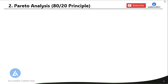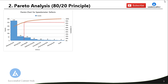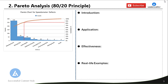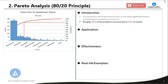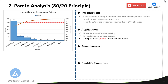Now let's go to the second decision making tool, which is Pareto analysis, also called the 80-20 principle. Pareto analysis is a prioritization technique that focuses on the most significant factors contributing to a problem or outcome. This principle states that roughly 80% of problems occur due to 20% of the causes. Pareto analysis is the most used and effective tool in problem solving, resource optimization, and is a core part of quality control and quality assurance.